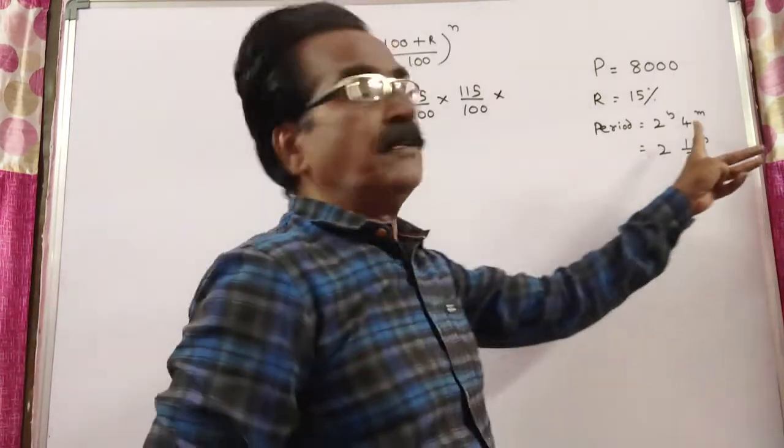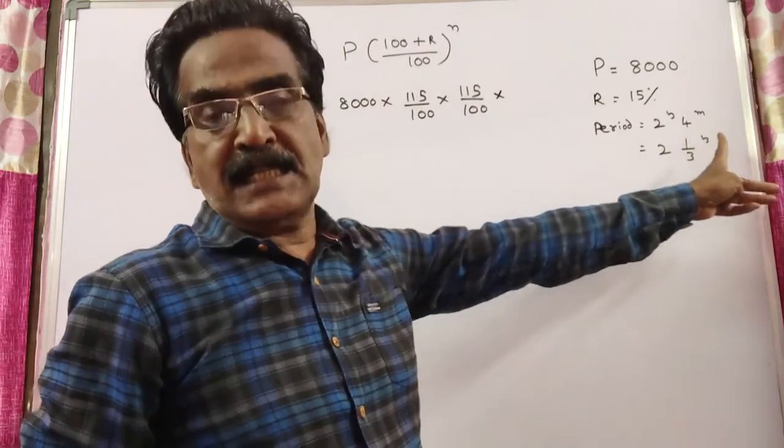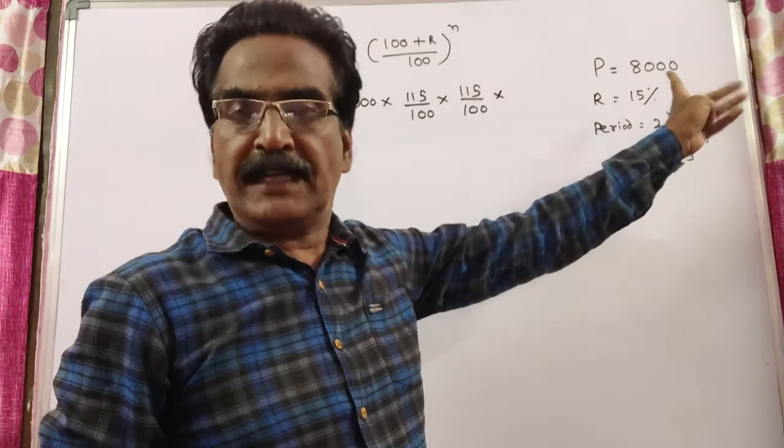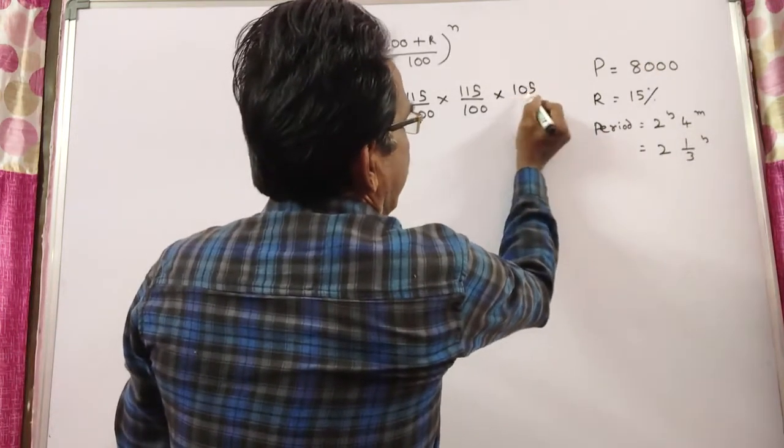Into again we want interest for 1 by 3 year also. So, since 1 by 3 year, R must be taken as 15 by 3 that is equal to 5. So, 105 by 100.